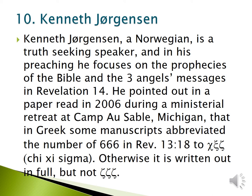Usually the verse is written in full for this number, or if it is abbreviated, it is Chi, Xi, Sigma. Chi stands for 600 in Greek numerals, Xi stands for 60, and Sigma stands for 6. It is never Sigma, Sigma, Sigma — like we do in modern days with Arabic numbers as 'triple six.' It is not triple six; it is 666 as we see in the Greek Bible.